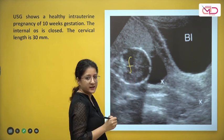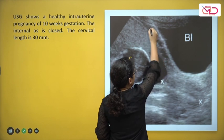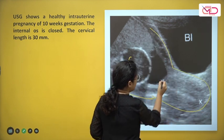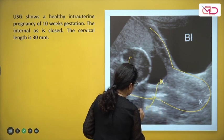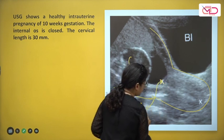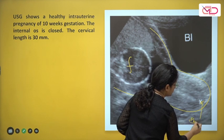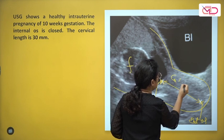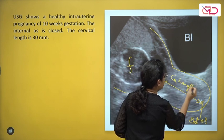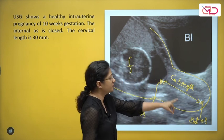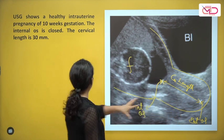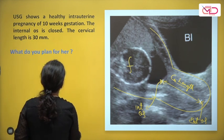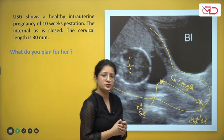Looking at the ultrasound image: the fetus's head is visible, along with the lower uterine segment, the cervix, the internal os marked here, and the external os marked here. Cervical length is measured from the internal os to the external os — it is measuring 30 mm. The next question is: what do we plan for this woman?